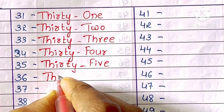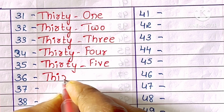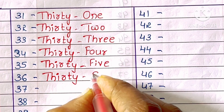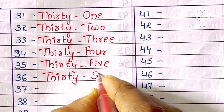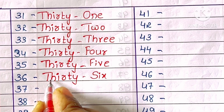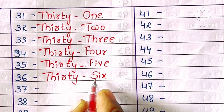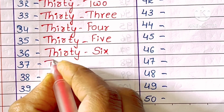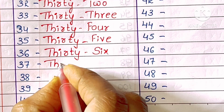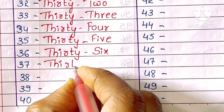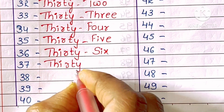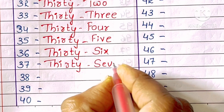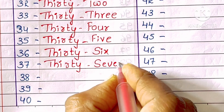36. T-H-I-R-T-Y-S-I-X. Thirty-six. 37. T-H-I-R-T-Y-S-E-V-E-N. Thirty-seven.